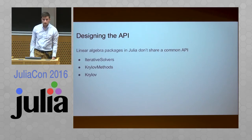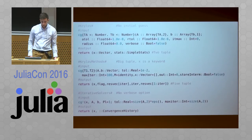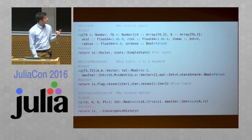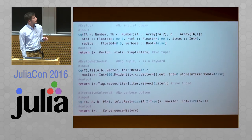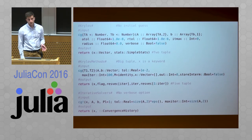So I have to design an API for three packages existing in Julia: IterativeSolvers, KrylovMethods, and Krylov. Here we can see that CG is a common method all three packages have, and you can see that the signatures in the three packages are really different.